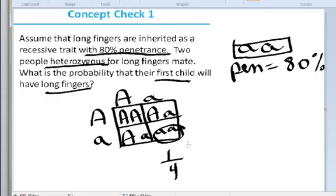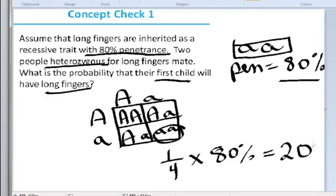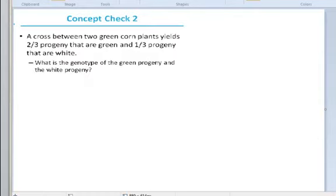And how do we calculate the penetrance? We multiply by the probability of the penetrance. And we get an answer that the probability of having a child with long fingers is 20%.